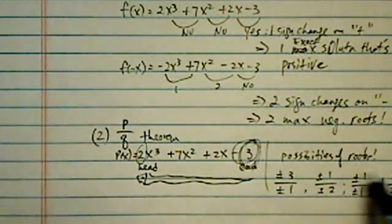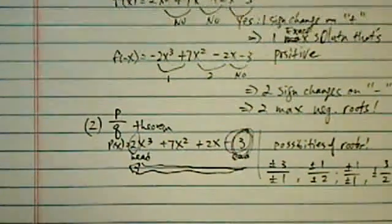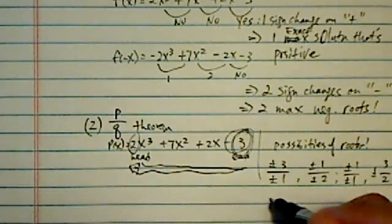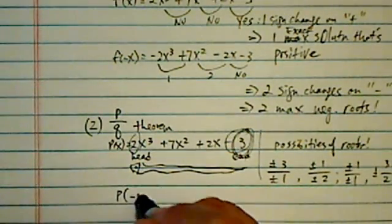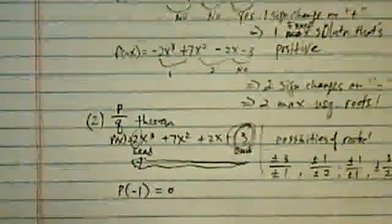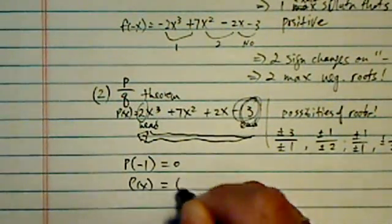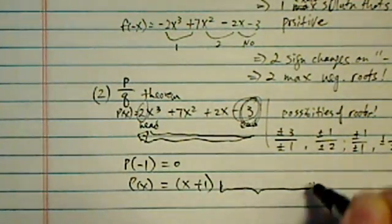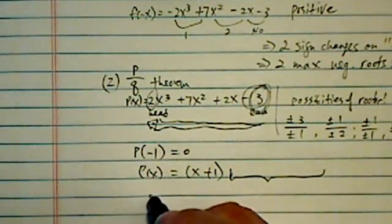Actually 4. I'm getting ahead of myself. So it's 4 possible choices, 8 actually. So I did a little bit of work ahead of time. I found out that P minus 1 is equal to 0. That gives me a head start in that I know P of this X can be written as X plus 1 times something else. I'm going to use long division or synthetic division.